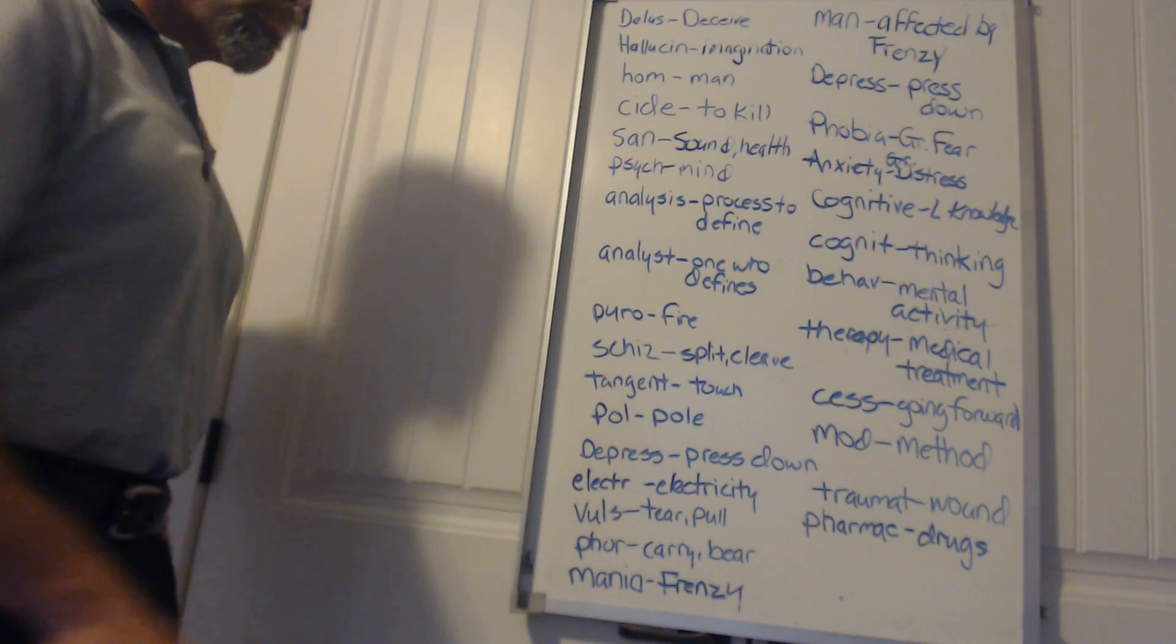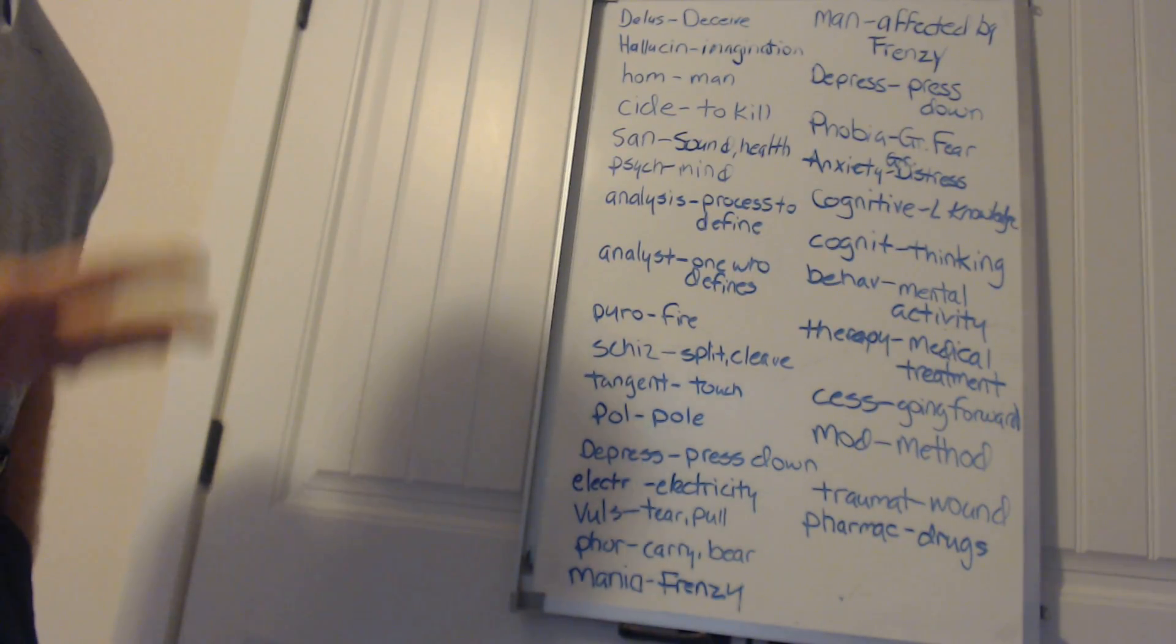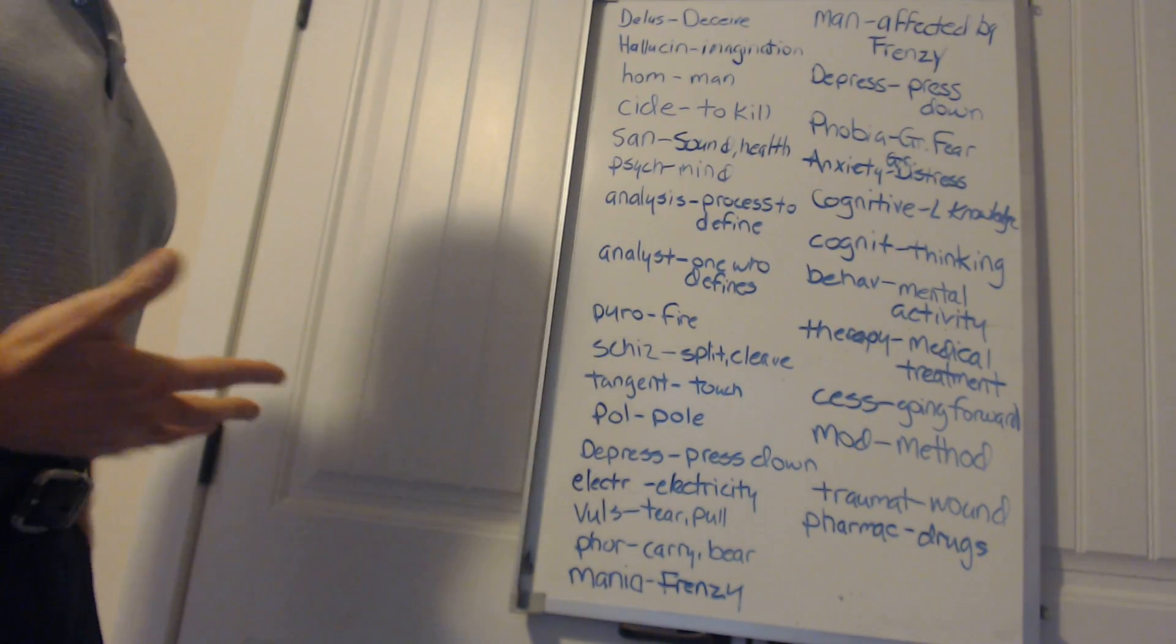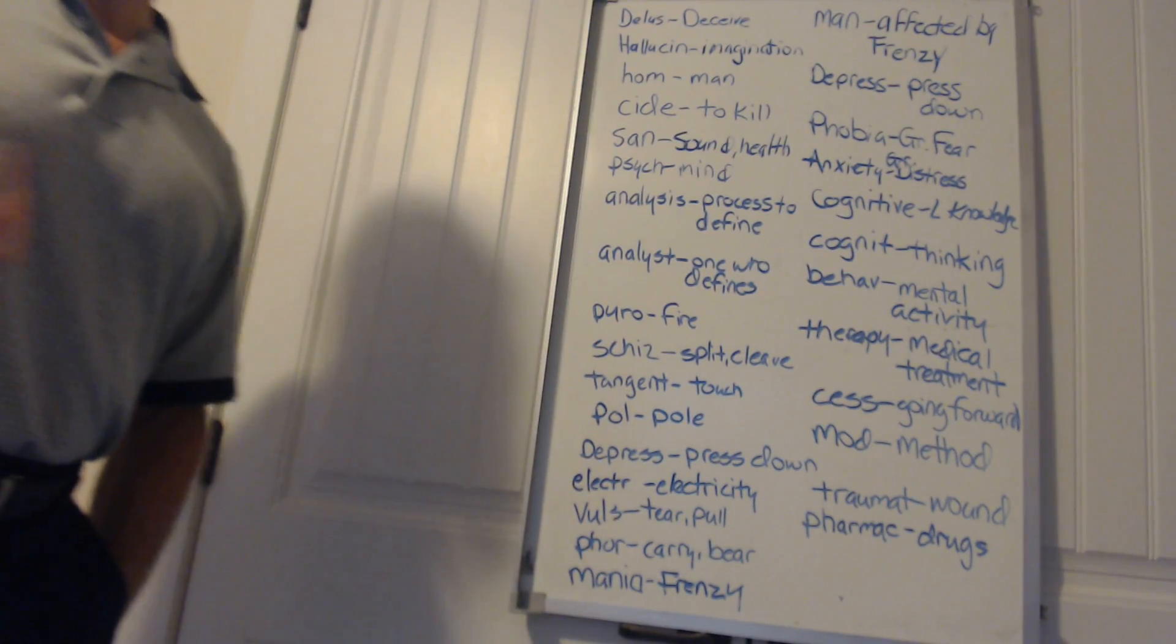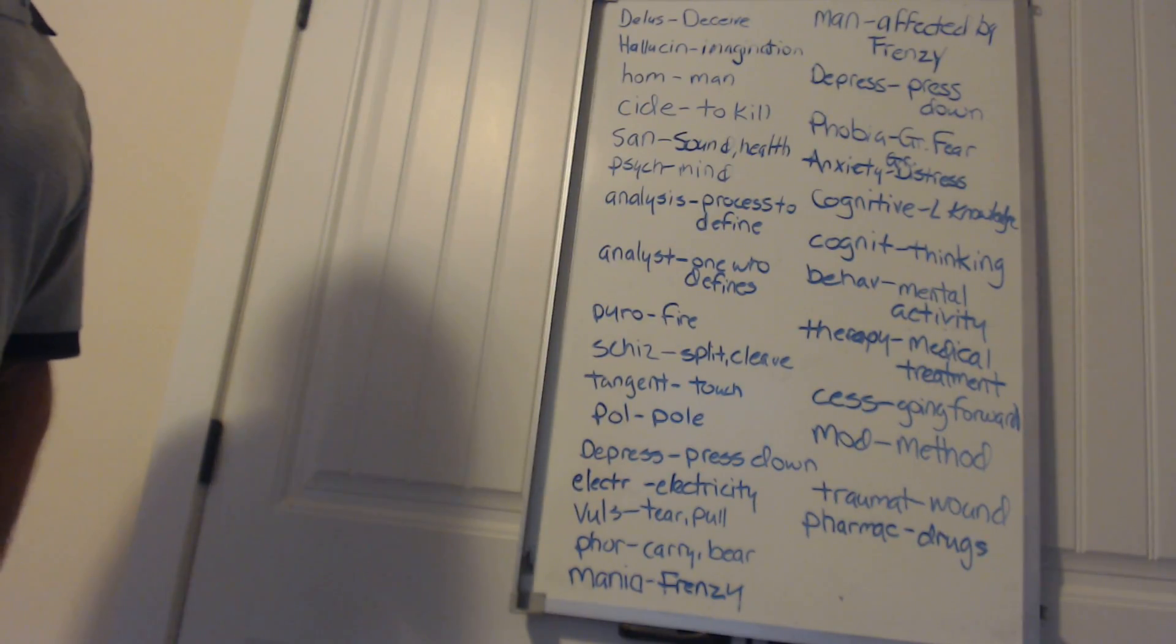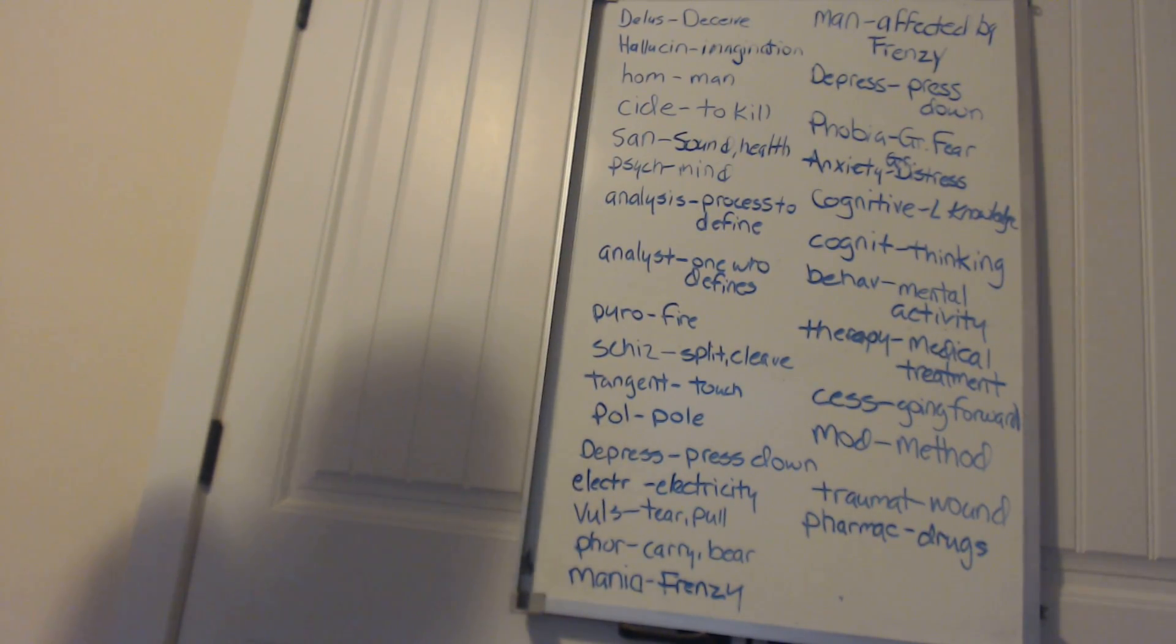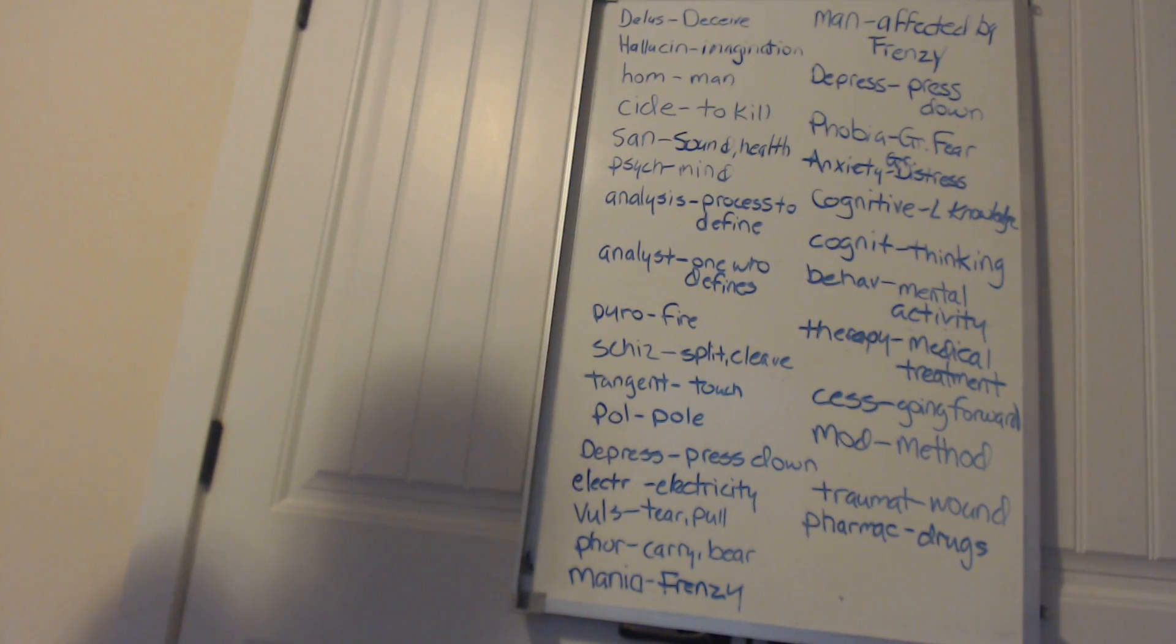Depress means to press down, like depression. Depression is the process of pressing down. Electro means electricity, like electrotherapy or electroconvulsive therapy, where electrodes are actually attached to the cranium and electrical energy is discharged into the brain to try and aid a person with psychological issues.